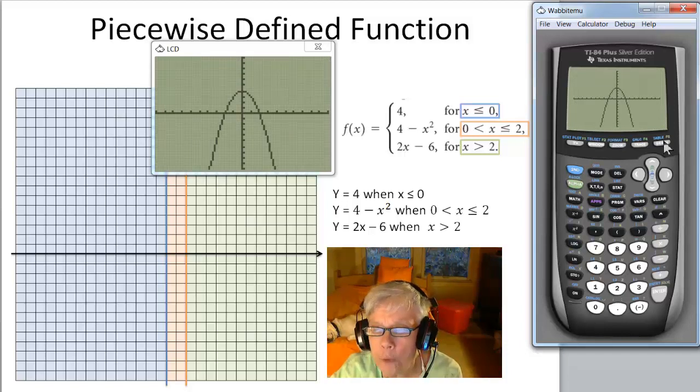That's the graph of 4 minus x squared, but I need the part of it, only the part of it between 0 and 2. So let's go back here.